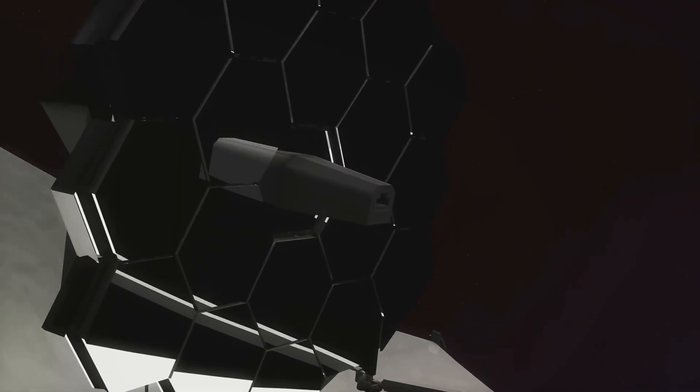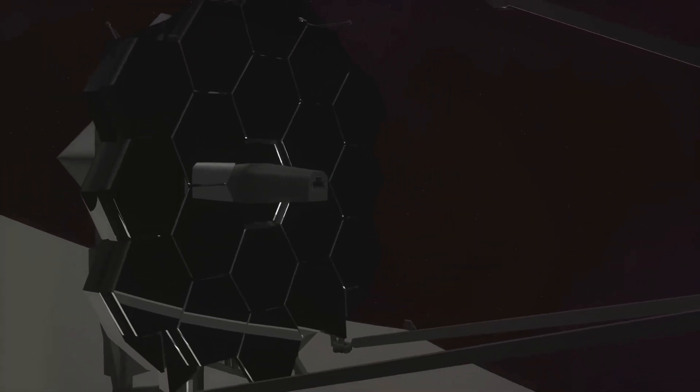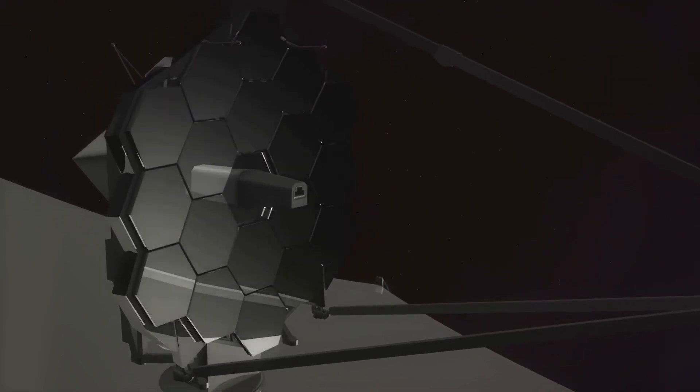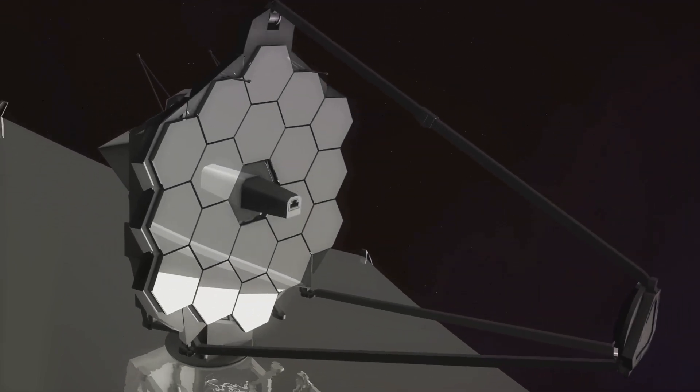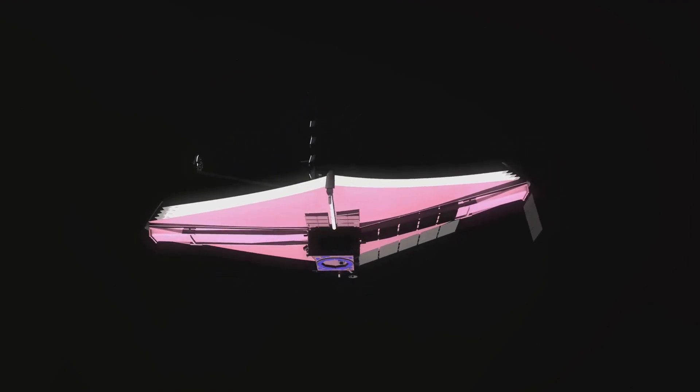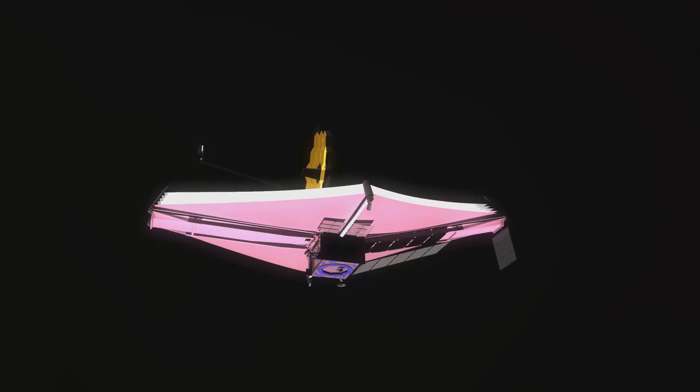The telescope's deployment was a feat of engineering excellence. It involved a series of intricate maneuvers to unfold its tennis court-sized sunshield, which protects its delicate instruments from the sun's heat. Once in position, the telescope began its monumental task of scanning the cosmos.